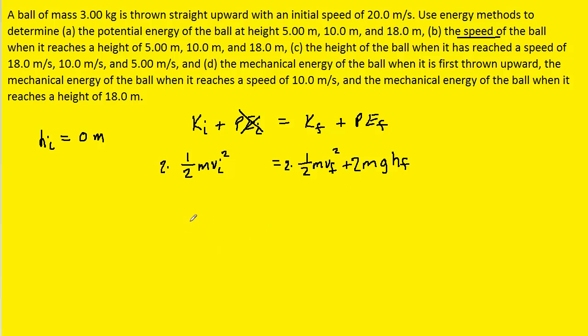If we do that, we're going to end up with mv initial squared equals mv final squared plus 2mgh final. We'll notice that the mass appears in all three terms, so we can actually eliminate it algebraically.